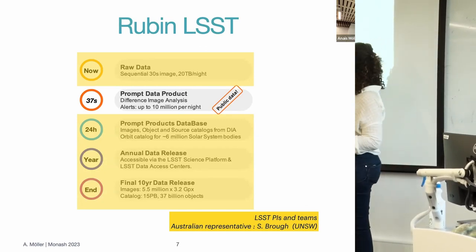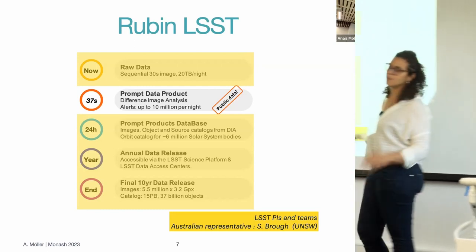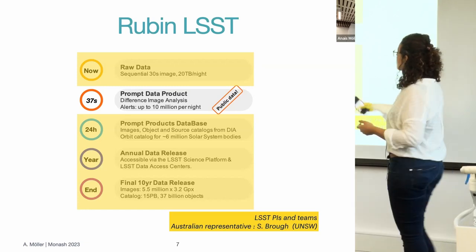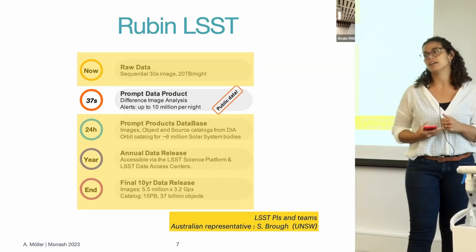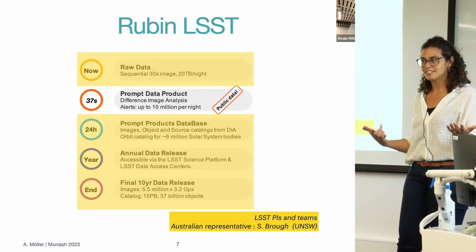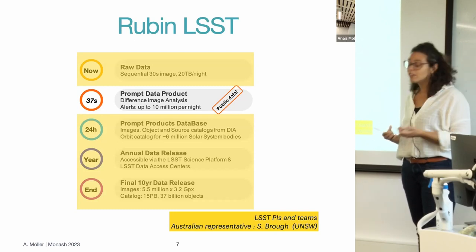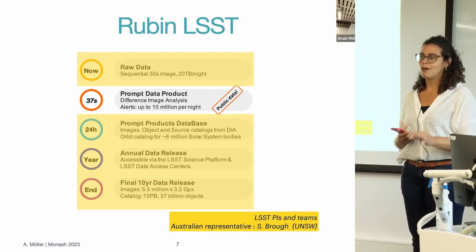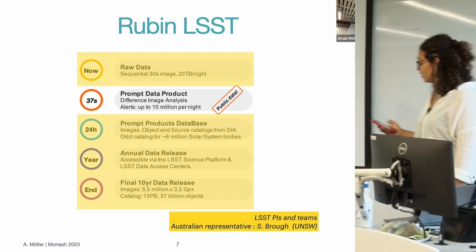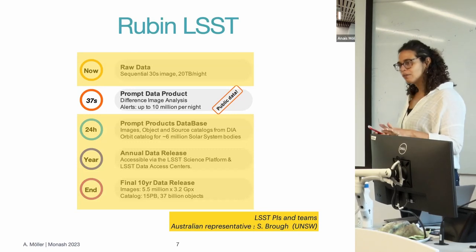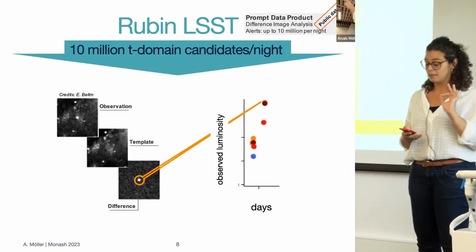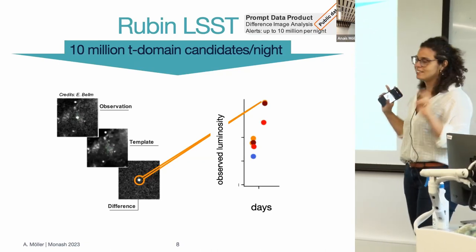If you want access to proprietary data you need to be part of LSST. But there is something that is absolutely public from the moment it is taken and processed: the difference image product. So I'm going to talk only about public data. What is difference image analysis? Basically, if you haven't worked with transients or variable star astronomy, what we do is take an image from last night, compare it to an old image, make a difference in a smart way, and monitor the brightness evolution of an object.